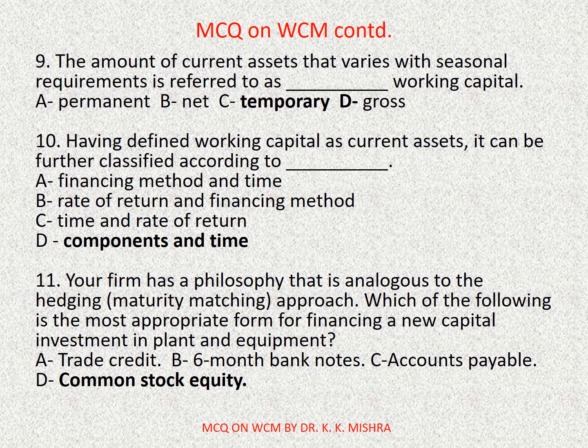Question number nine: the amount of current assets that varies with seasonal requirements is referred to as dash working capital. Options are: A) Permanent, B) Net, C) Temporary, D) Gross. Correct option is C: Temporary.